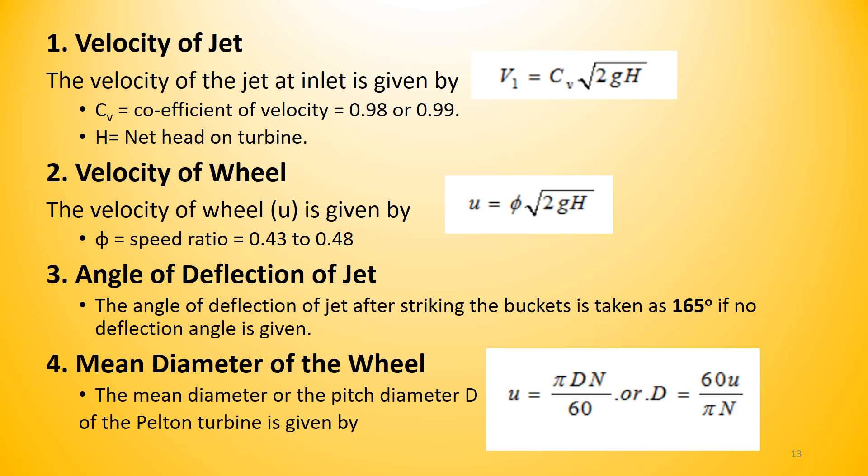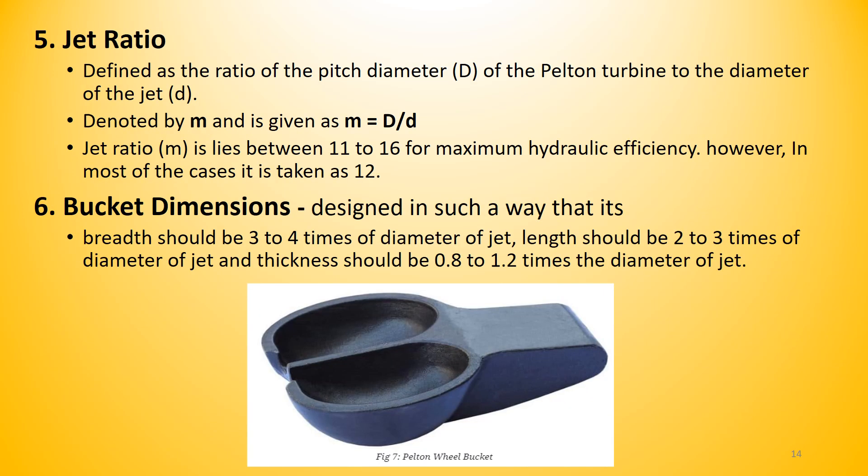The speed ratio φ lies between 0.43 to 0.48. The angle of deflection is usually taken as 165° unless otherwise mentioned in the problem. The mean diameter D is found from u = πDN/60. The jet ratio m is defined as the ratio of the pitch diameter D to the diameter of the jet d, so m = D/d. It usually lies between 11 to 16; however, in most cases it is taken as 12.